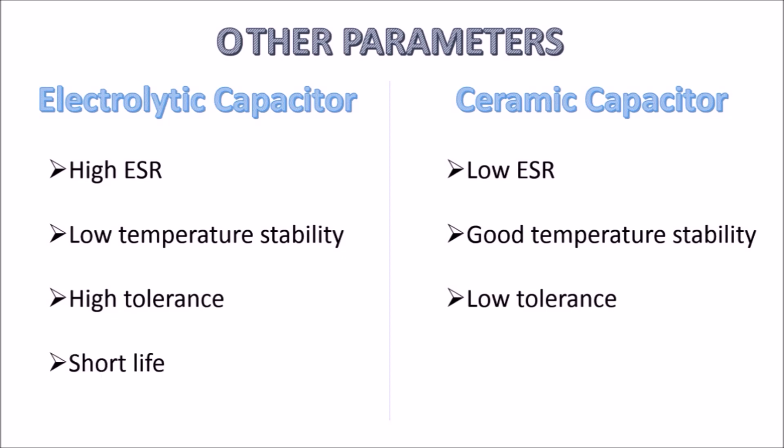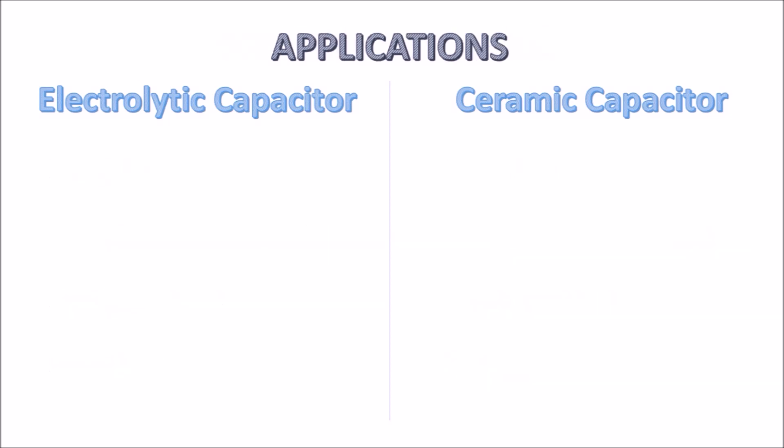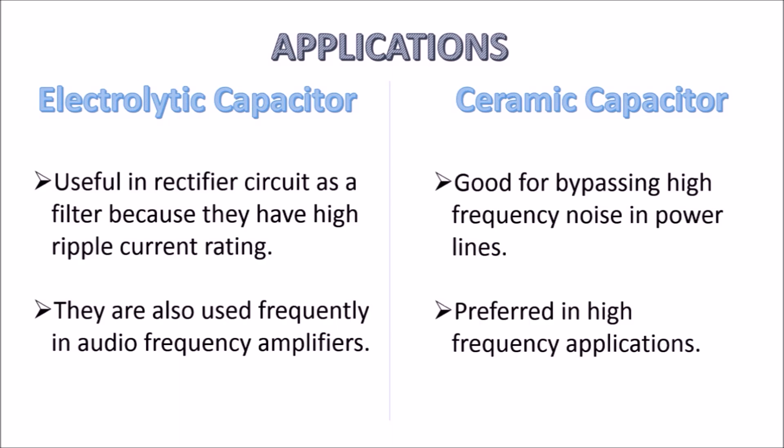Let's talk about applications. Electrolytic capacitors are useful in rectifier circuits because they deal with DC current and are used as filters in rectifier circuits. They are also good in audio frequency amplifiers. Ceramic capacitors are good for bypassing high frequency noise in power lines and are preferred in high frequency applications.